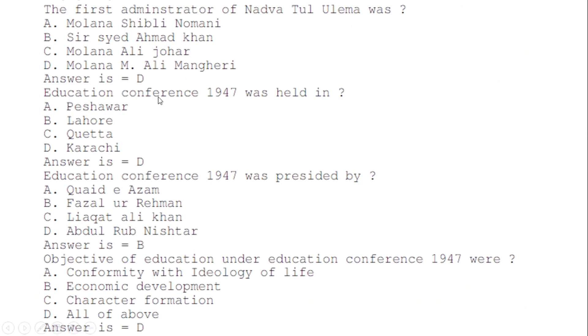The first administrator of Nadwat ul Ulama was: correct option D — Maulana Mohammed Ali Mongeri. Education conference 1947 was held in: correct option D — Karachi. The conference was presided by: correct option B — Fazlur Rahman.